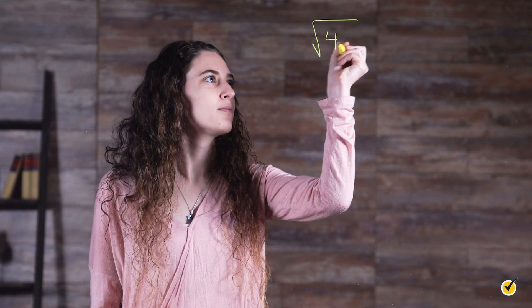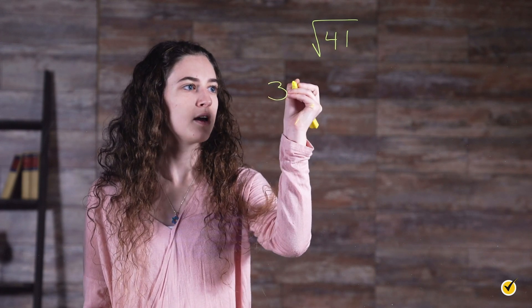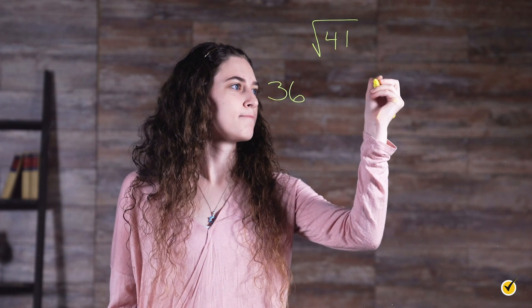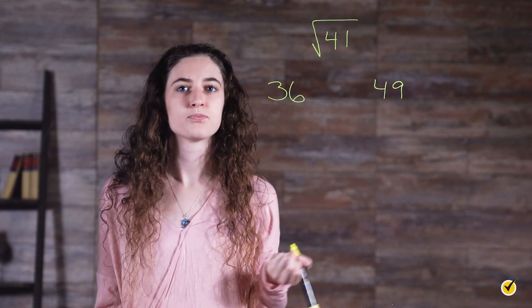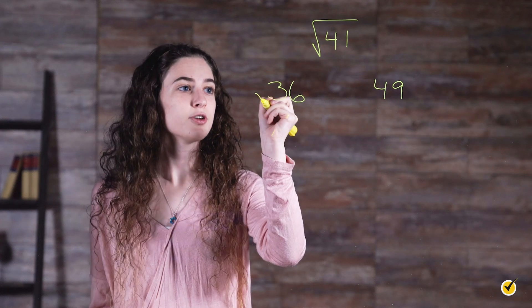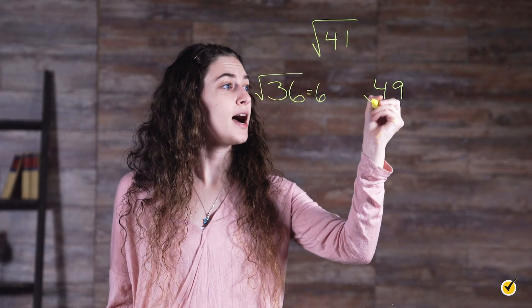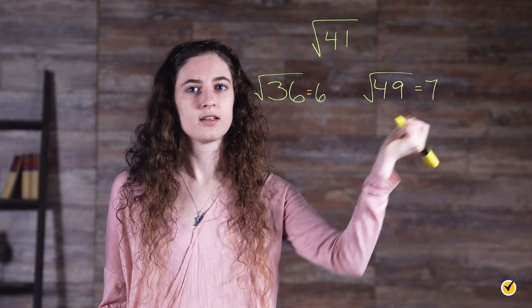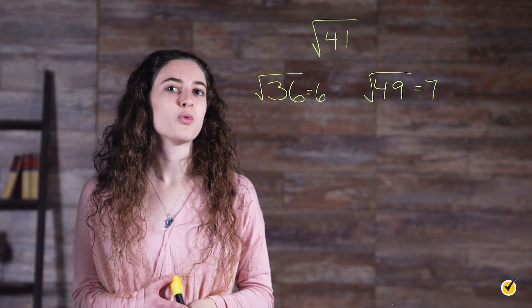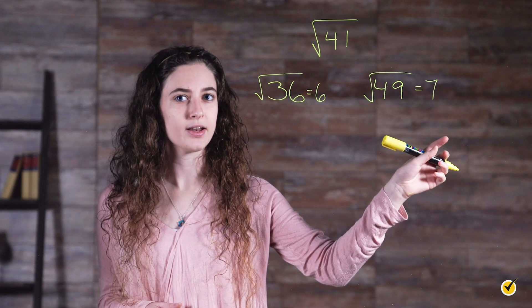The square root of forty-one. Forty-one is not a perfect square, so the way to estimate its square root is to find the two perfect squares on either side of it. The perfect square right below forty-one is thirty-six, and the one right above it is forty-nine. Now we know that the square root of thirty-six is equal to six, and the square root of forty-nine is equal to seven. So the square root of forty-one has to fall somewhere between six and seven.